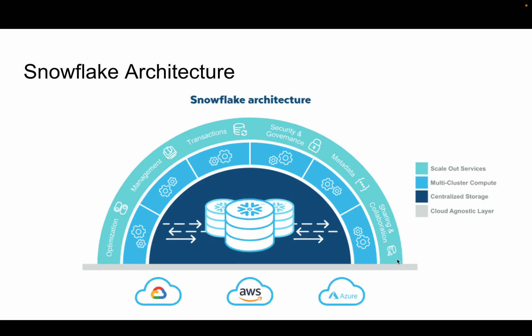The cloud services layer provides optimization, management, transactions, security and governance, metadata, and sharing and collaboration. It handles query optimization, checks whether a user has access, tracks all transactions, and maintains ACID properties. Security and governance covers who data is shared with and how data is encrypted.